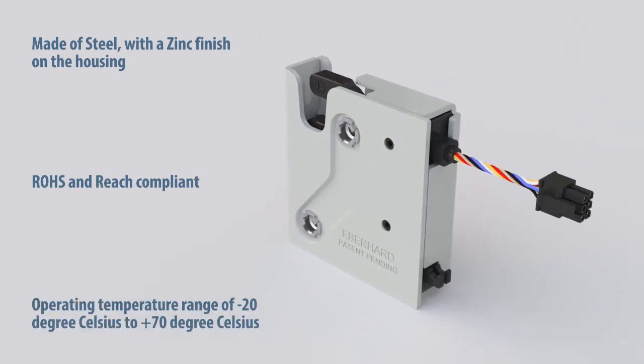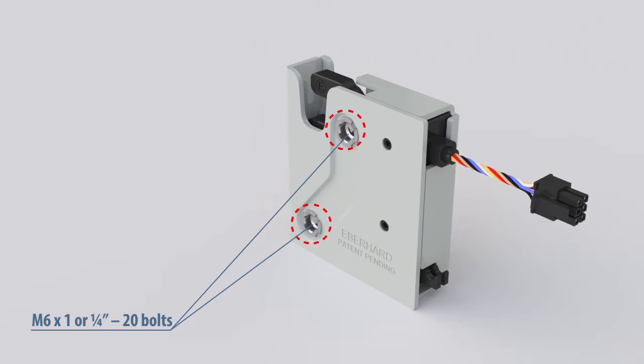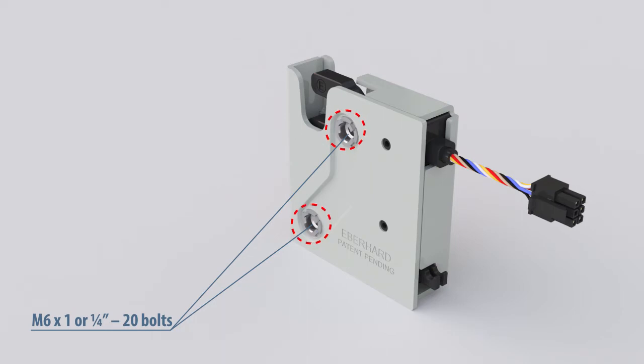the wide operating temperature range makes it a great latch for various climate applications. The latch has two mounting holes, which allows the latch to be mounted using either M6x1 or ¼ inch by 20 bolts and is designed to be used with a 3-8 inch striker.